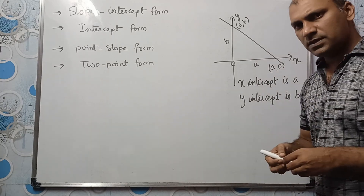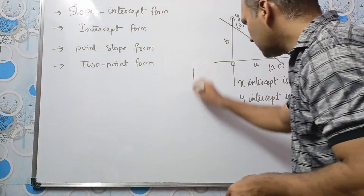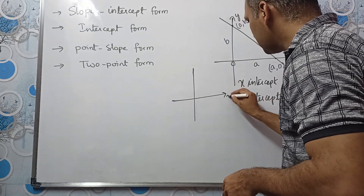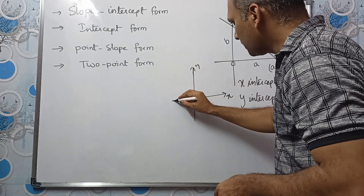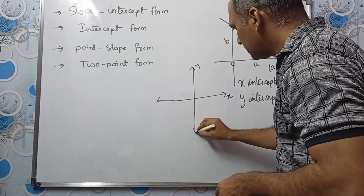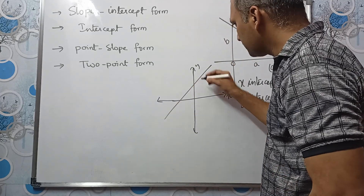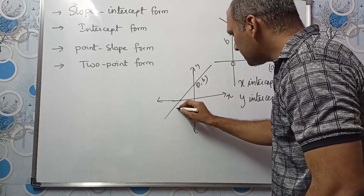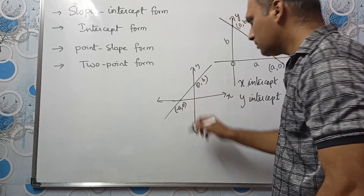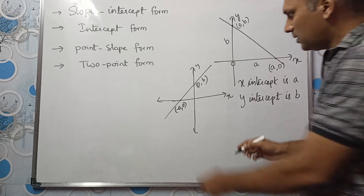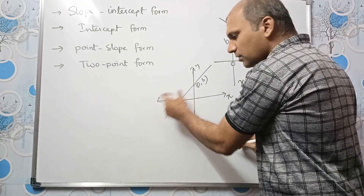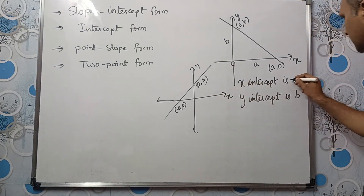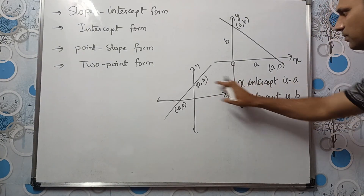Can we have negative intercepts? Yes, of course we can. If we have a straight line where it crosses the x-axis on the negative side, that point is (-a, 0), and the y-intercept is at (0, b). So in that case, x-intercept is minus a and y-intercept is plus b.